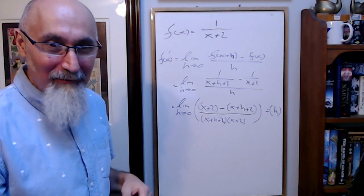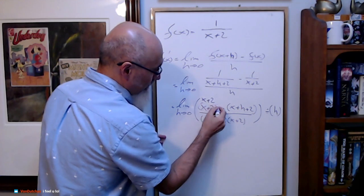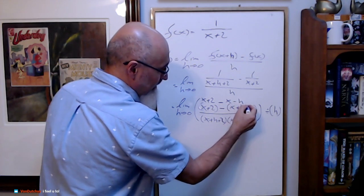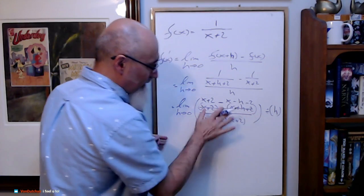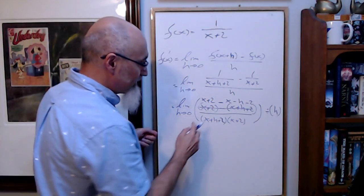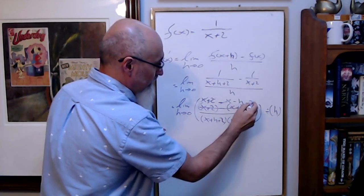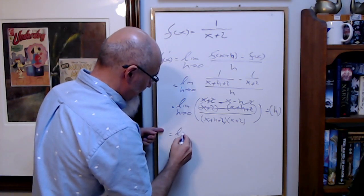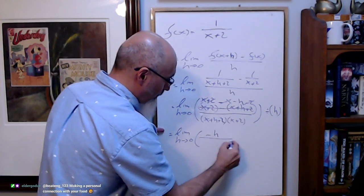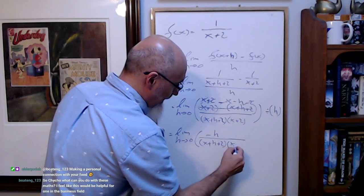So expand this: it's x plus 2 minus — the minus in front of the bracket means all signs change — minus x minus h minus 2. Now simplify: x minus x cancel, 2 minus 2 cancel. So on top we have: limit as h approaches zero of negative h over x plus h plus 2 times x plus 2.